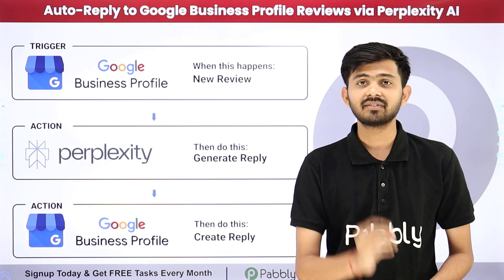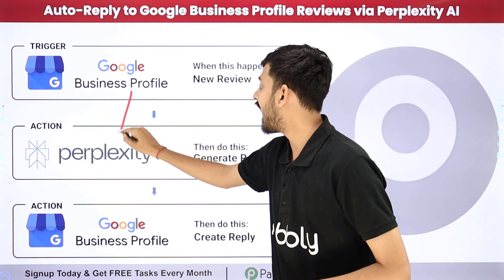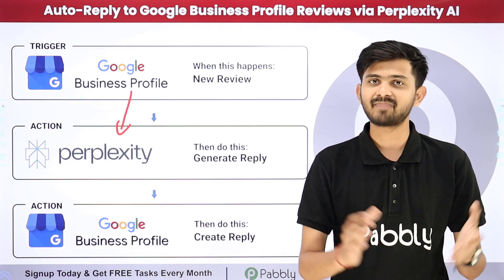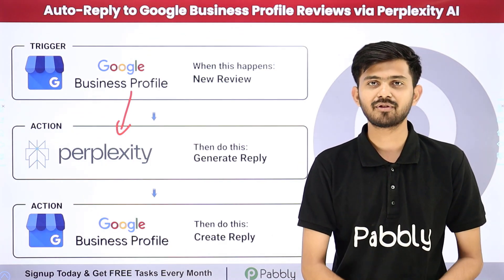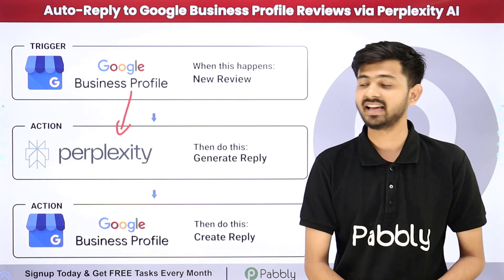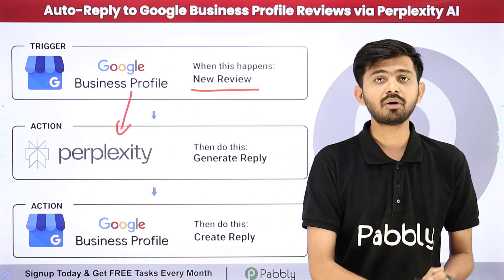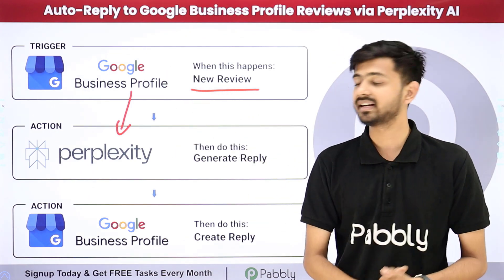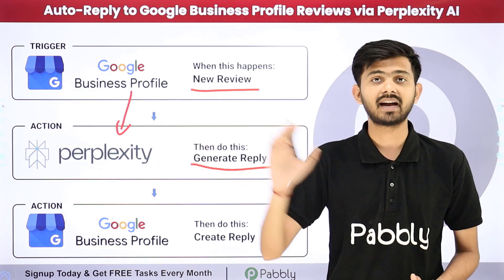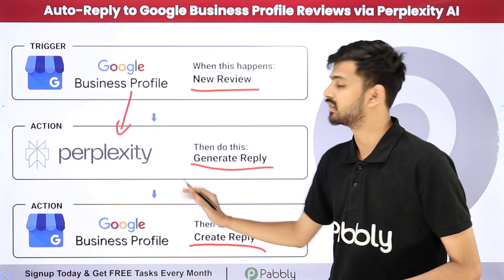For my objective, I need to build a connection between Google Business Profile and Perplexity AI. I am going to use Pabbly Connect, which is an amazing software for automation and integration. Whenever I receive a new review on Google Business Profile, I will automatically generate a reply using Perplexity AI and post it back to Google Business Profile.